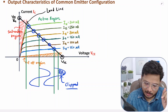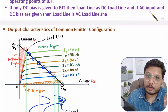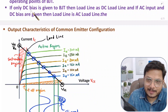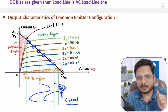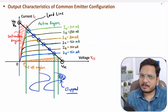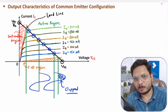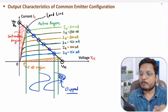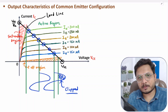In AC load line, we have DC bias along with AC input. In DC load line, we don't give any AC input — only DC bias is there. Otherwise, the load line remains the same for AC and DC. I hope you have understood. If you have any questions, please note them in the comment section. Thank you so much for watching this video.